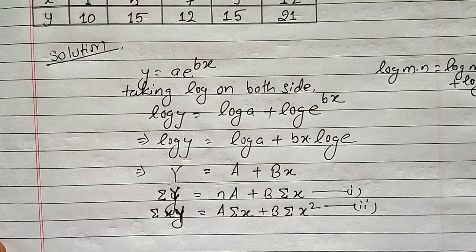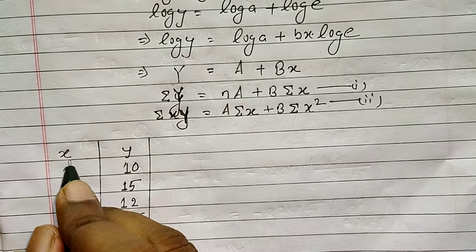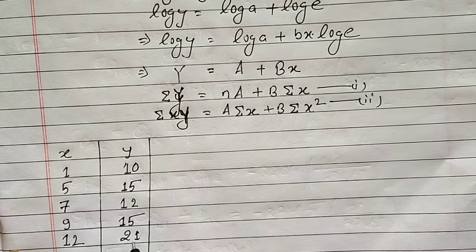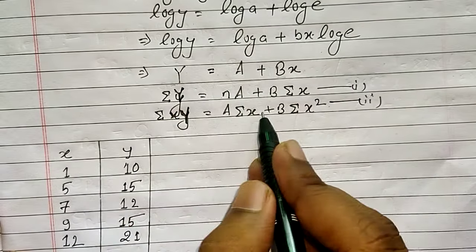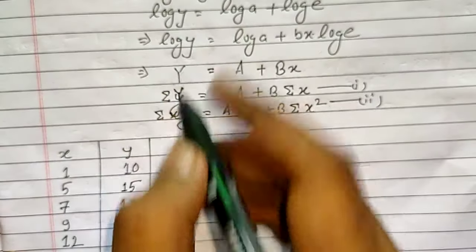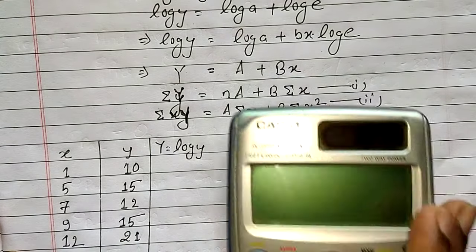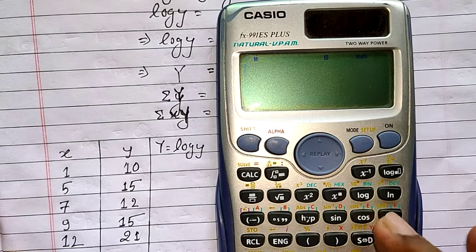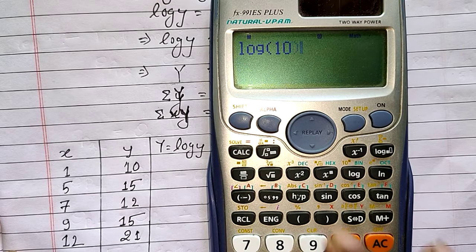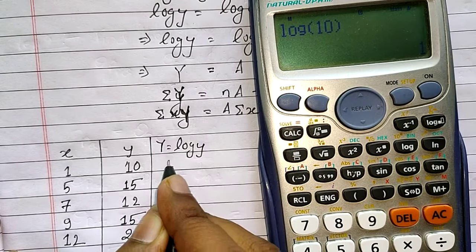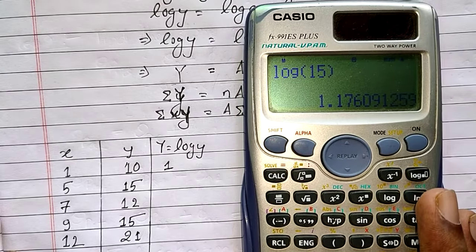Let's draw the table and find the solution. I have written the given values of x and y. Since we use capital Y in every equation, we need to find log y, because capital Y = log y. Using log base 10: log 10 = 1, and log 15 = 1.17.